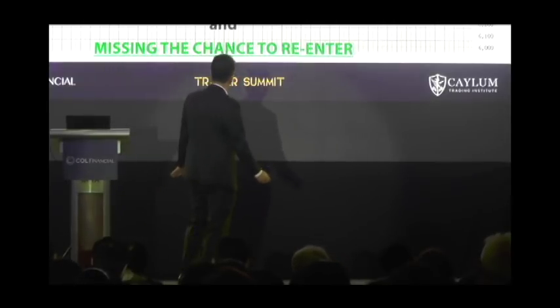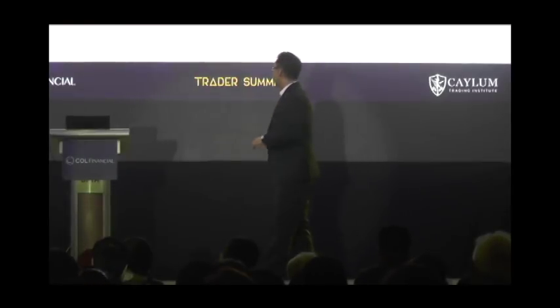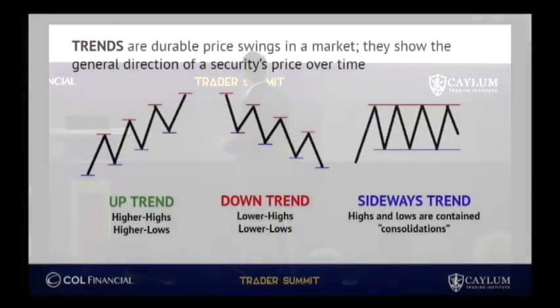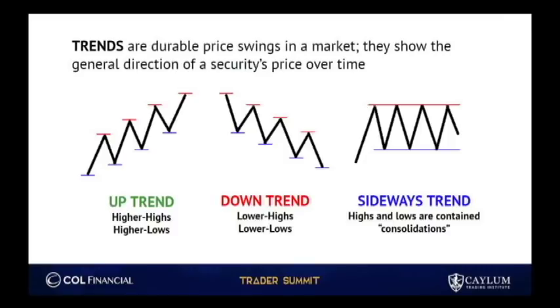In order for us to do this, we need to start here. Trends. Trends are durable price swings in markets. They show the general direction of a security's price over time. There are three forms of trends: up, down, and sideways. We call this the bull market, the bear market, and the consolidation.